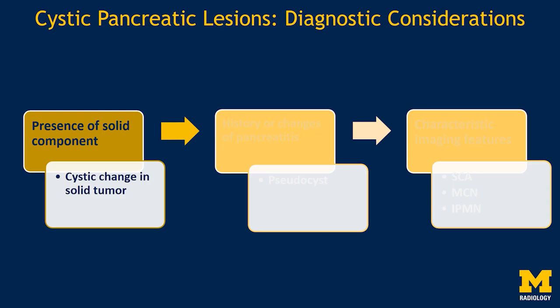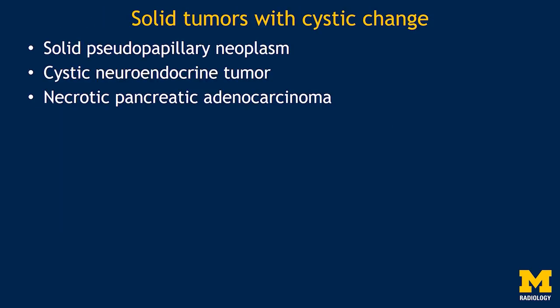The first question we need to ask is to assess for the presence of a solid component, which would suggest a solid tumor with cystic change within it and not a true cystic lesion. Solid tumors which can have cystic change include solid pseudopapillary neoplasm, a cystic neuroendocrine tumor, or a necrotic pancreatic adenocarcinoma.